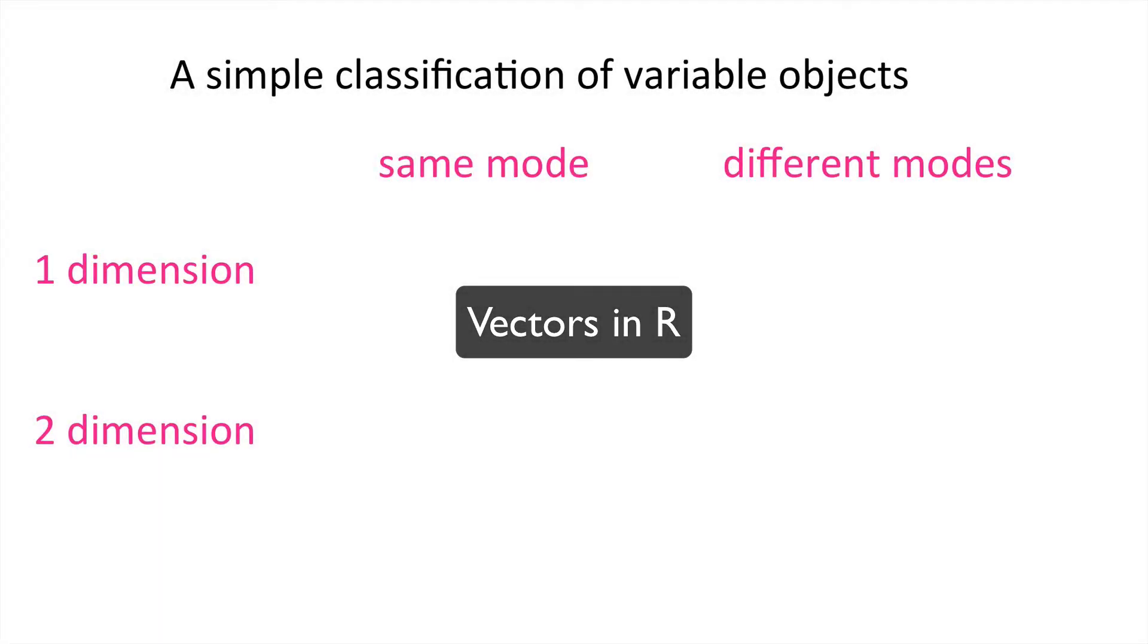Hello. In order to introduce vectors to you, I'd like to begin with a simple classification of objects in R. Perhaps the simplest classification is based on how many dimensions and whether the elements in the object have the same mode or different modes.